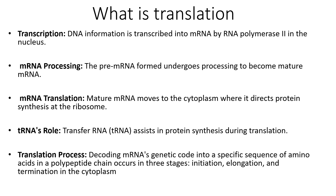This involves a molecule called transfer RNA, also known as tRNA, which helps in protein synthesis during translation. During the translation process, the mRNA's genetic code is decoded into a specific sequence of amino acids forming a polypeptide chain, which occurs in three stages known as initiation, elongation, and termination within the cytoplasm.